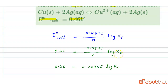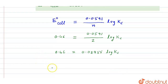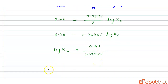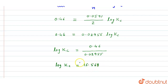Now we have to find the value of Kc, the equilibrium constant. Therefore, we can write: log Kc = 0.46 ÷ 0.02955. Upon dividing, we get log Kc = 15.568. This is the value of log Kc.